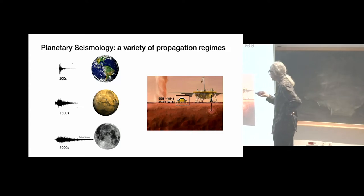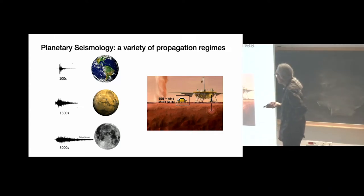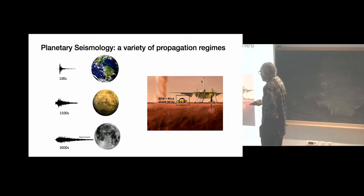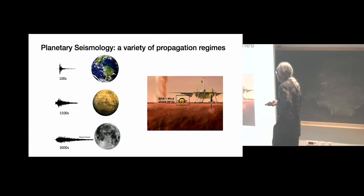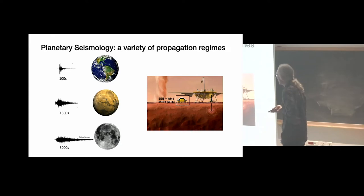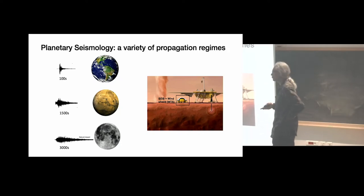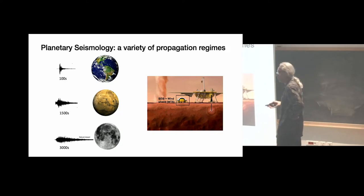There is another excellent seismometer developed by people at Imperial College in London. The difference between the two instruments is the frequency band. The VBB goes down to about 40 or 50 seconds period and up to 10 Hz. The SP frequency band is from two Hz up to kilohertz, probably.